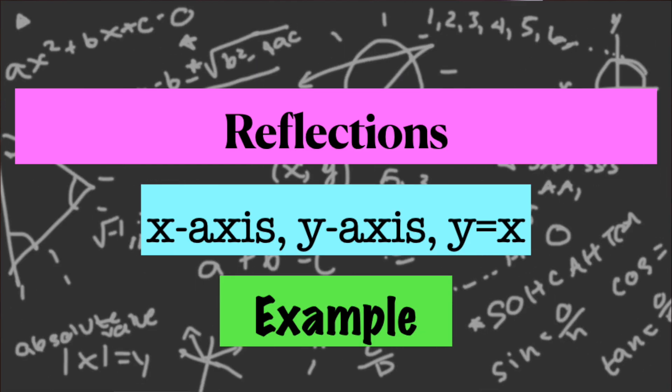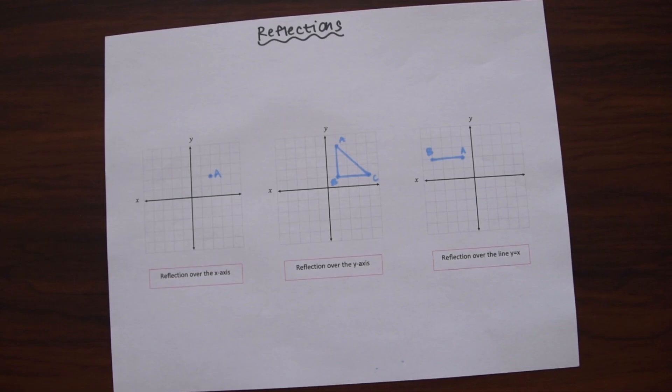So all reflections are exactly what they sound like. When a point, line, segment, or shape is reflected it creates a mirror image of itself. I always like to think of a butterfly or a page being folded in half where there is perfect symmetry and we'll see what that looks like.